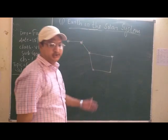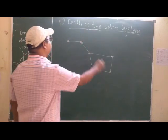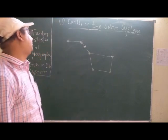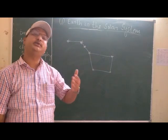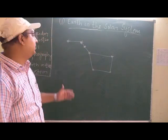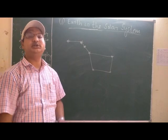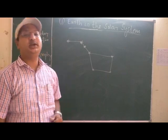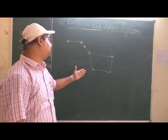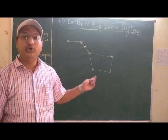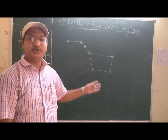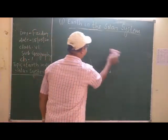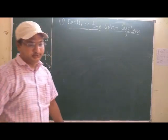There are seven stars in a group forming the Saptarishi constellation. If these stars form a shape or a particular picture in the galaxy or in the night sky, that is called a constellation, named Saptarishi.